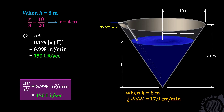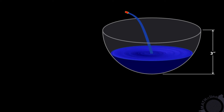In our next example, we have this hemispherical bowl of radius 3 inches. Water is being poured into this bowl at the rate of 1 cubic inch per second. At any time, the depth of the water in the bowl is h. The question is: how fast is the water surface area increasing — that is dA/dt — when the depth of the water is 1 inch?